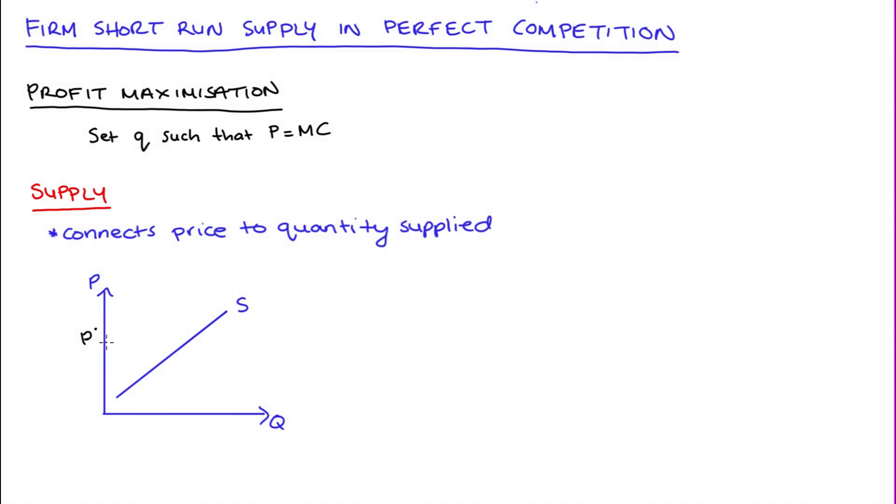And you can see I've got one drawn here, it's upward sloping. And what it does is it connects the price, say p star, to the quantity supplied in the market, that's big Q subscript s.